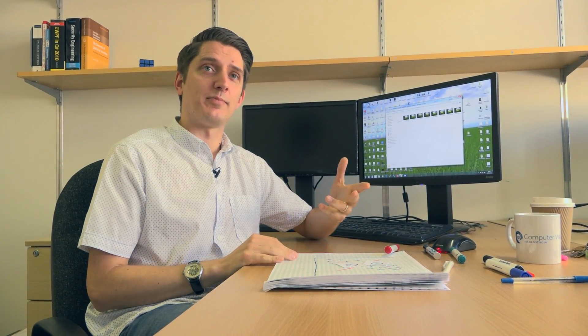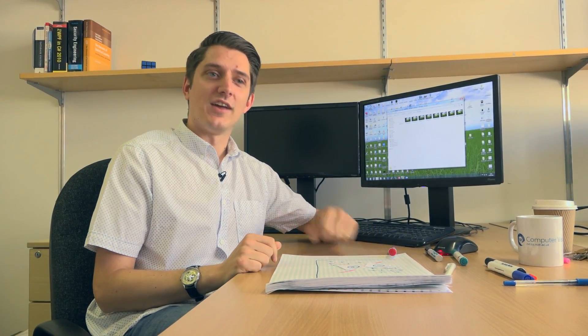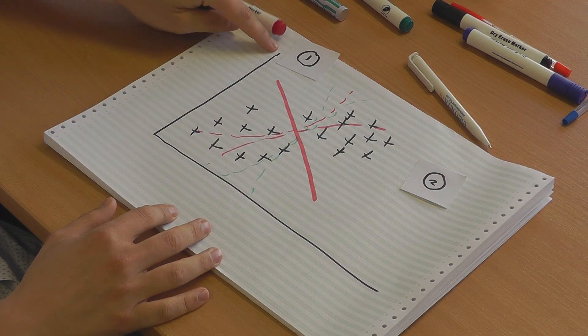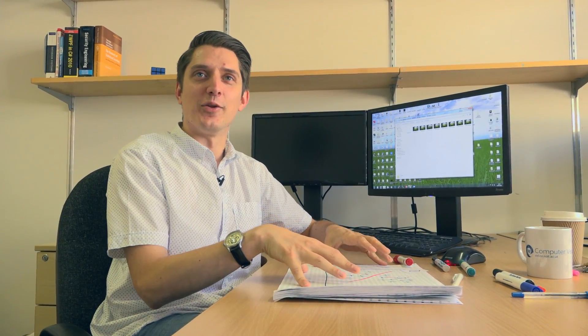K-Means is very effective. It's simple, really simple, two steps, basically. Move these points into one of the two classes, and then recompute the means, and just do that over and over again. Now, this is two-dimensional data, x and y, but there's no reason it couldn't be three or four or five-dimensional data. I can't draw a five-dimensional object here on the paper. I could barely draw a three-dimensional one.